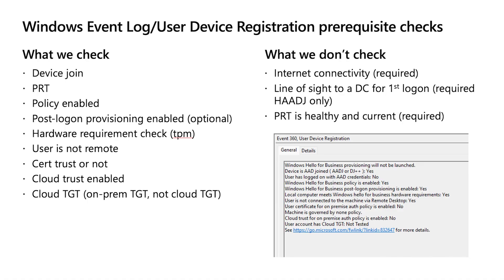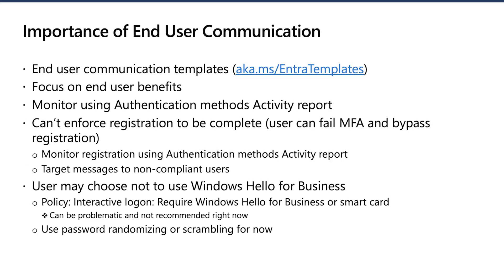We check to see if the user has the Primary Refresh Token, but we don't check to see if it's healthy or current. So when troubleshooting a failed Hello for Business registration, you'll need to check these yourself in the event logs. The most important part — and the one that's going to take time — is to ensure that your users set up Hello for Business for the first time on their devices. To ensure a successful rollout, we recommend educating your users on how to use Windows Hello for Business, what multi-factor authentication is, what biometric authentication is, and providing clear instructions on how to enroll. We've published end-user communication templates that can be used to start prepping your users for Hello for Business.